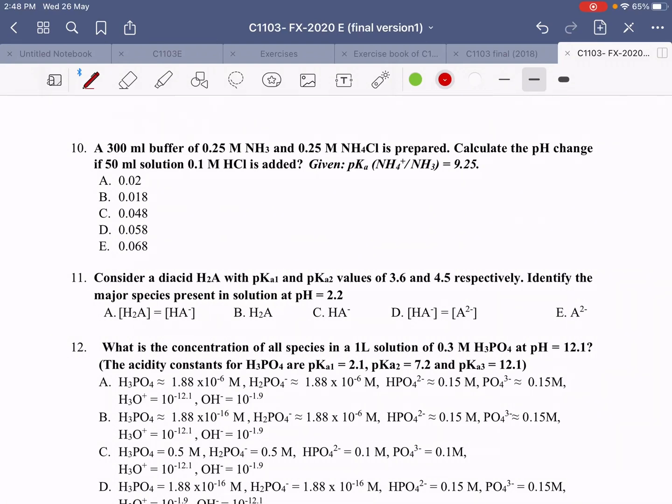The third page. 300 ml of a buffer solution containing NH3 and NH4 plus is prepared. Calculate the pH change if 50 ml of 0.1 molar HCl is added.